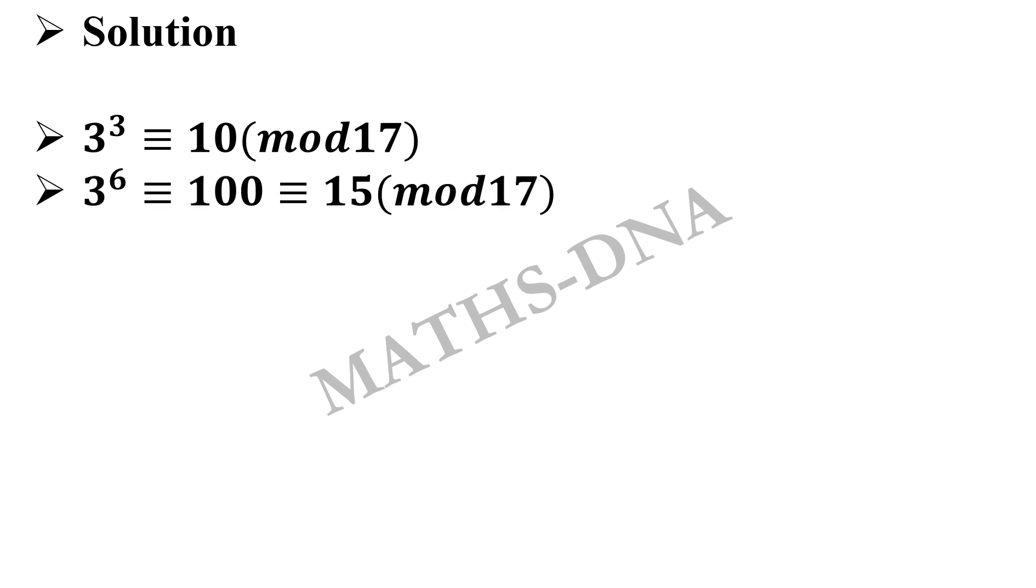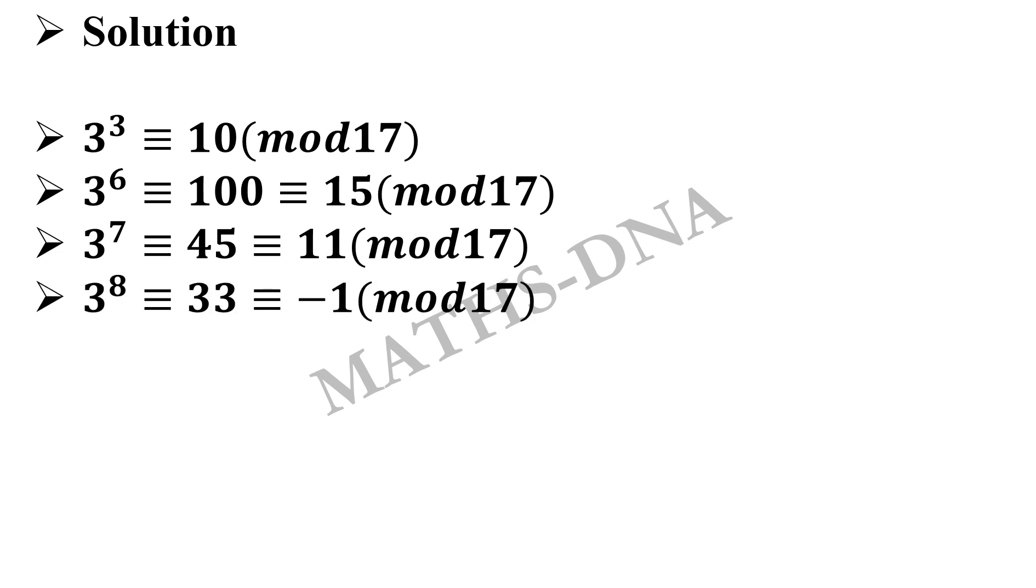Squaring this term, we get 3⁶ ≡ 100 ≡ 15 (mod 17). Multiplying it with 3 again gives us 3⁷ ≡ 45 ≡ 11 (mod 17), and then 3⁸ ≡ 33 ≡ -1 (mod 17).